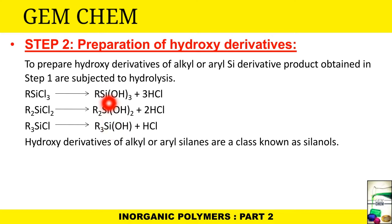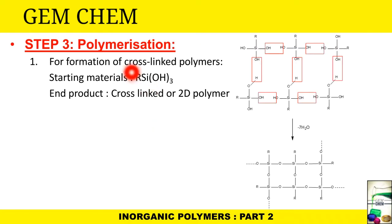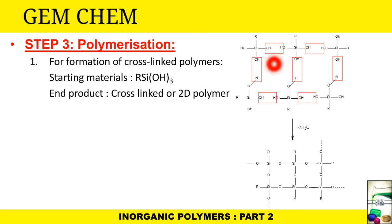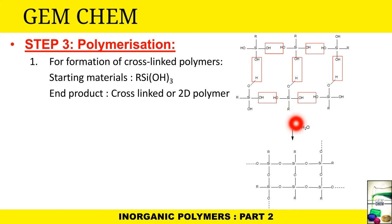Step 3 is the polymerization. For formation of cross-linked polymers, RSi(OH)3 is used as the starting material so that OH is present on all three sites. Reaction occurs with elimination of water. For this part only, 7 water molecules are eliminated to give this type of structure. For the whole structure, n water molecules are eliminated, where n is the number required.